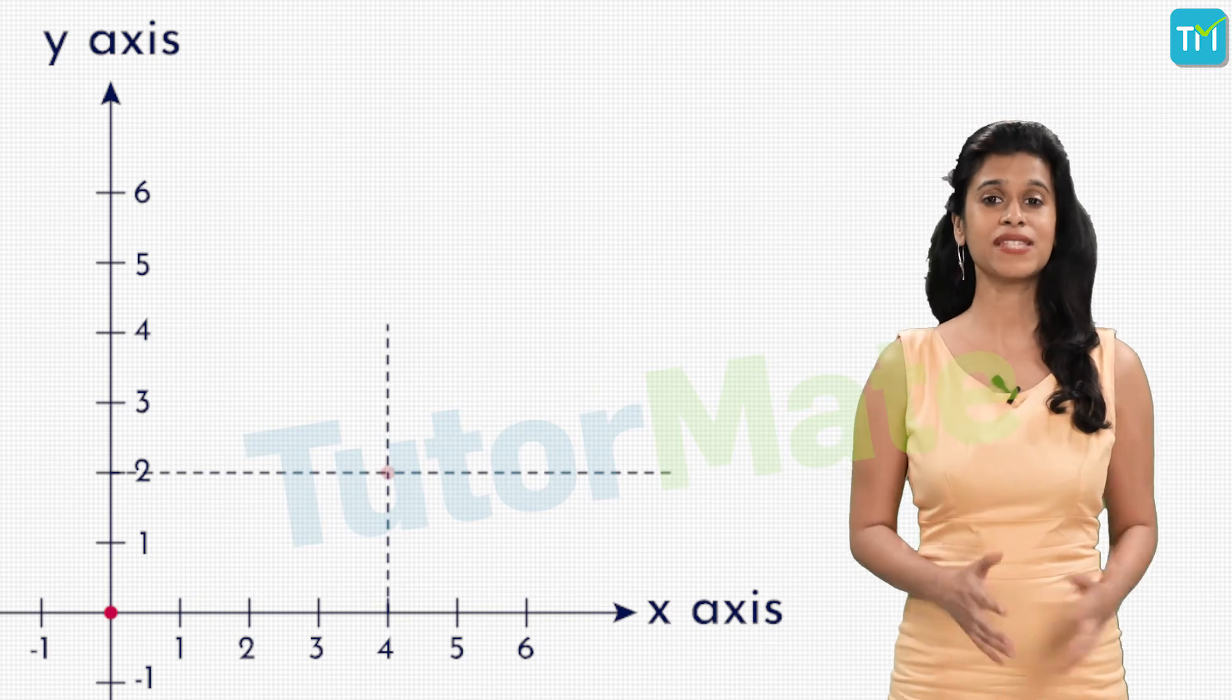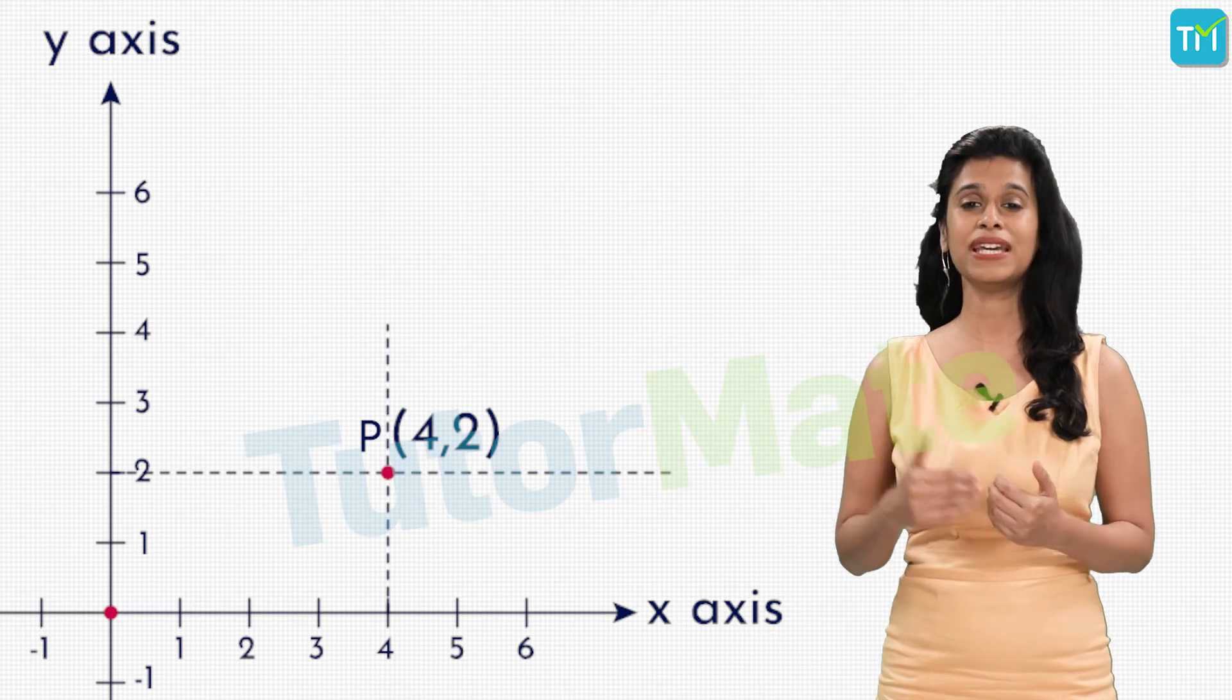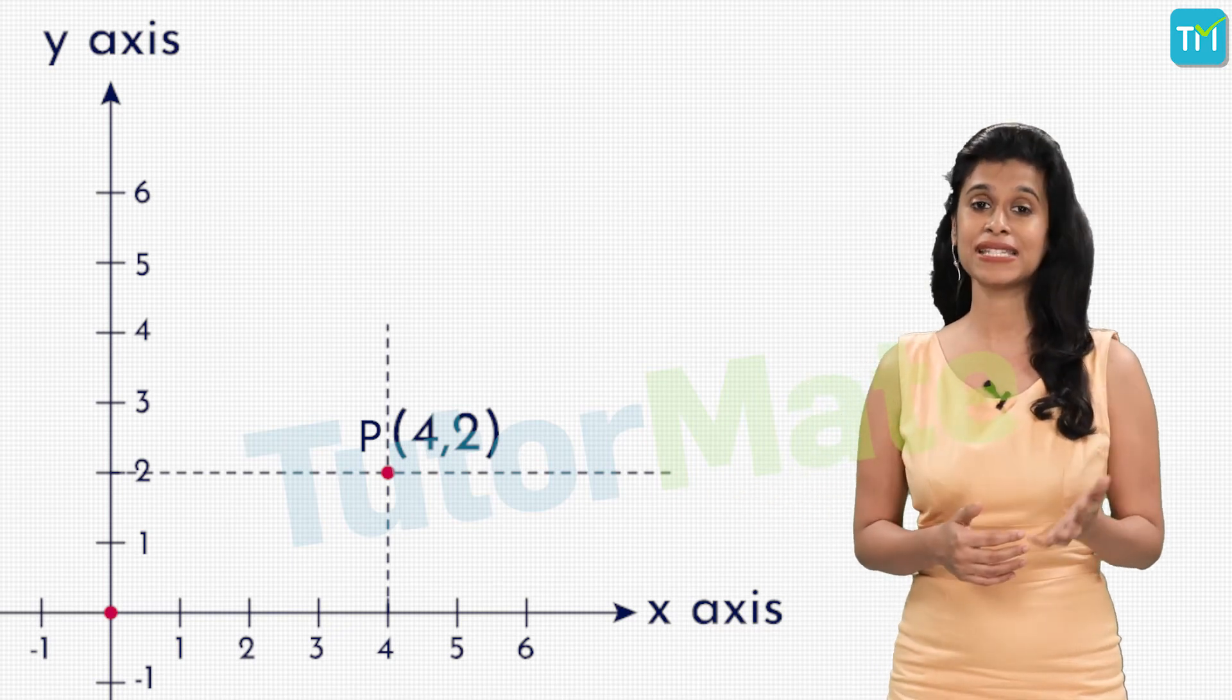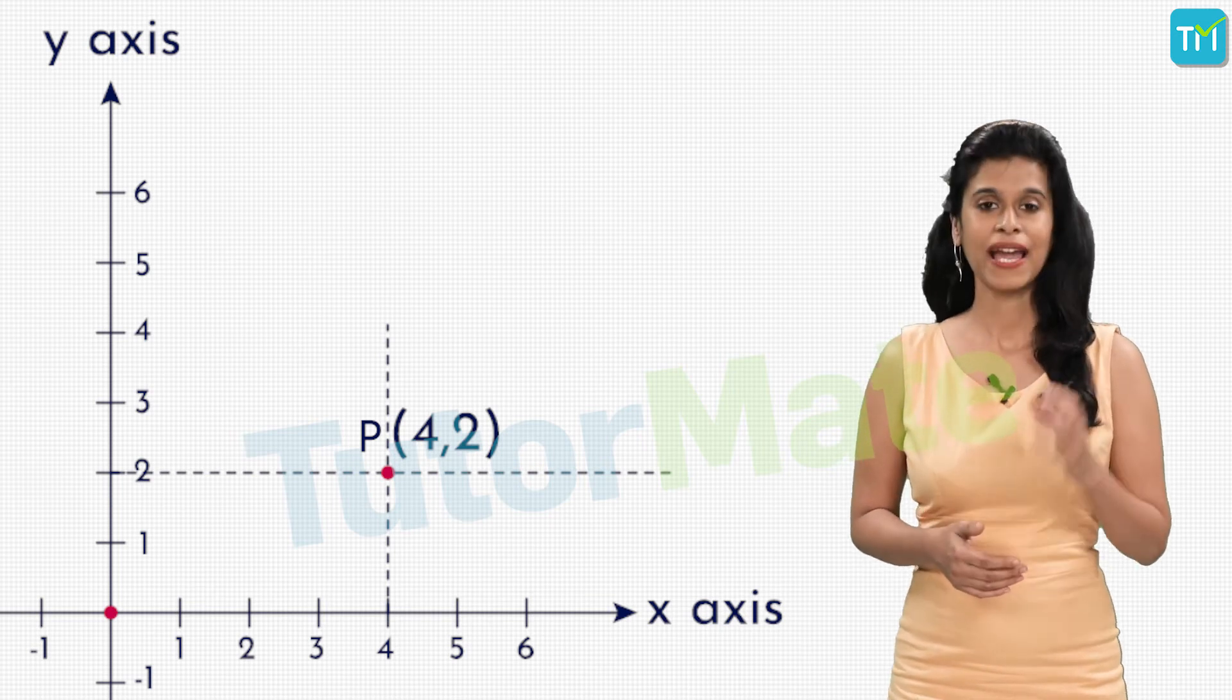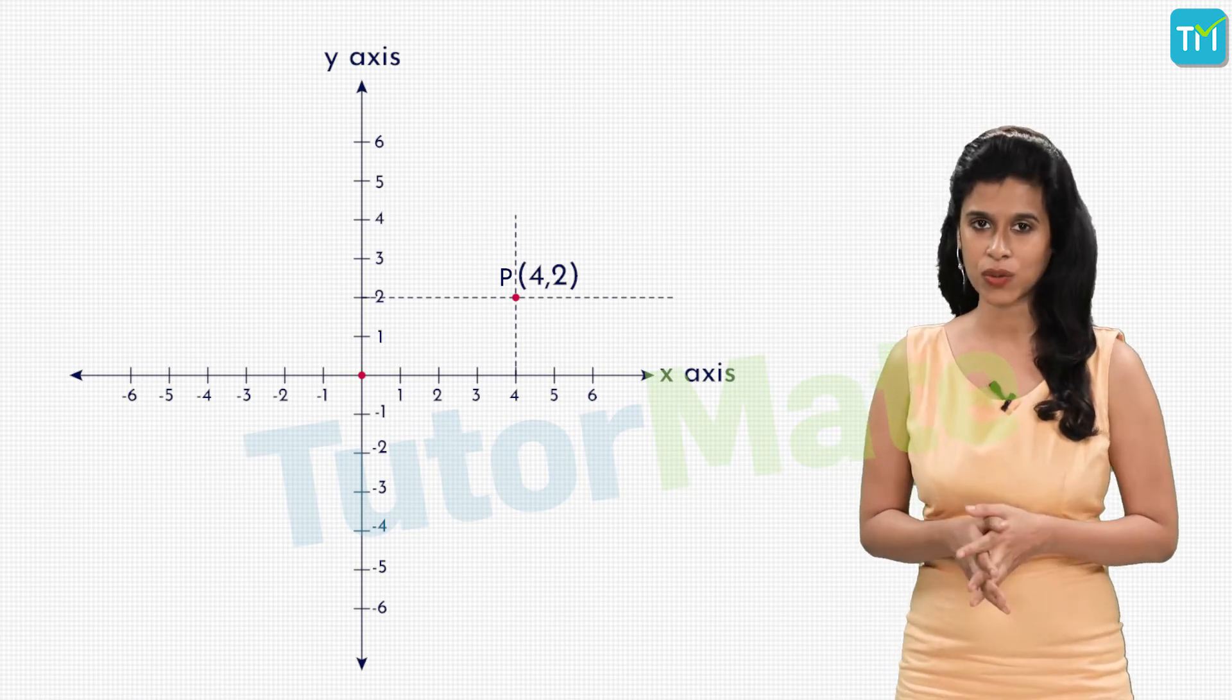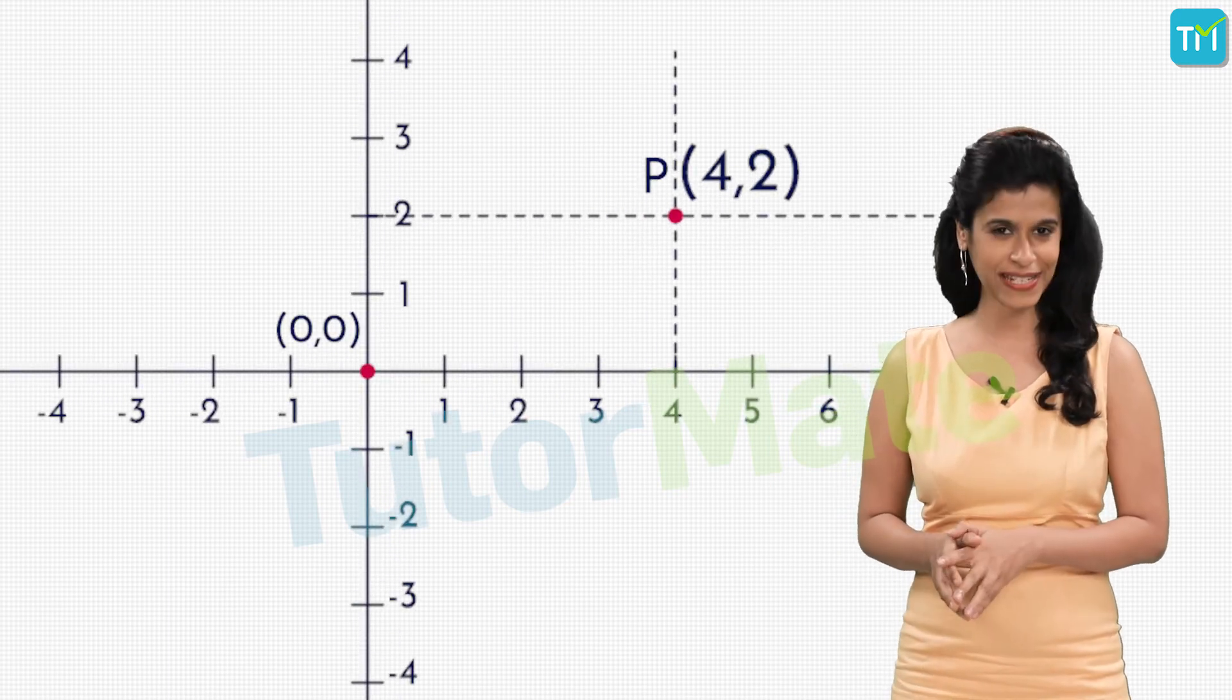Also we have seen how the x coordinate of a point tells us the distance of the point from the y-axis while the y coordinate of a point tells us the distance of the point from the x-axis. Since the distance of the origin from both the axes is 0, we get the coordinates of the origin as 0 comma 0, right.